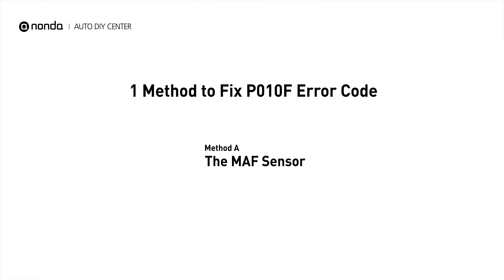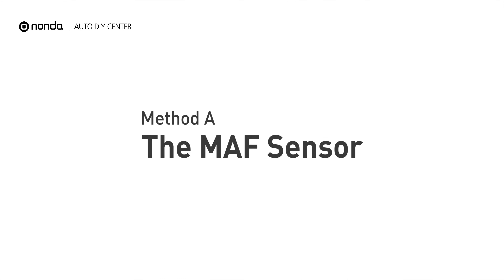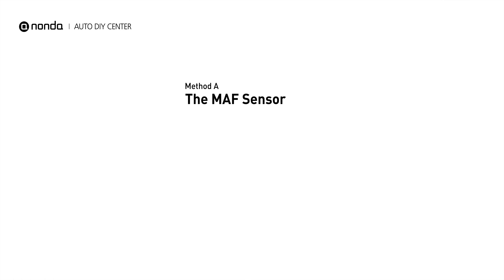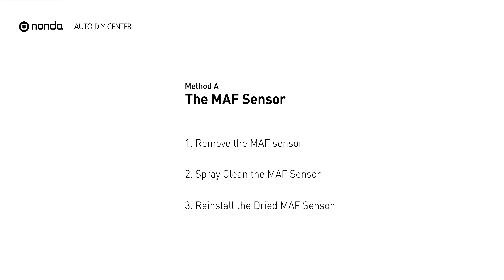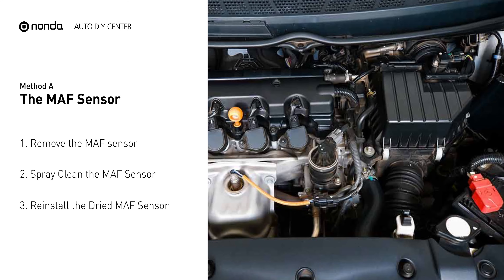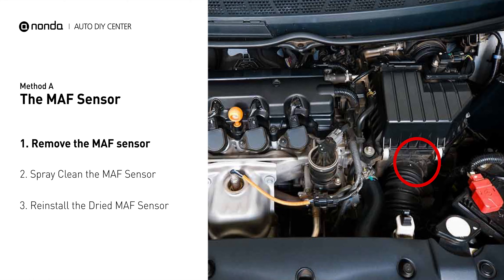Here is one simple DIY method you can try to solve this problem. Method A: MAF sensor. MAF sensors are located between the air filter and the throttle body.